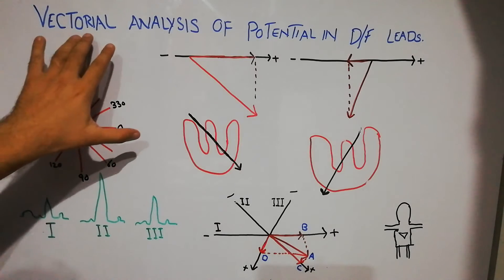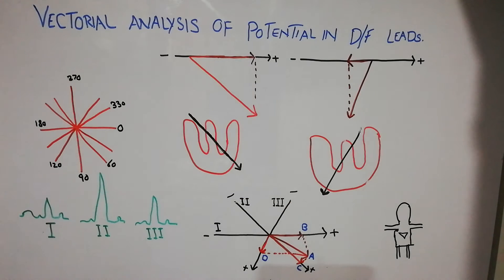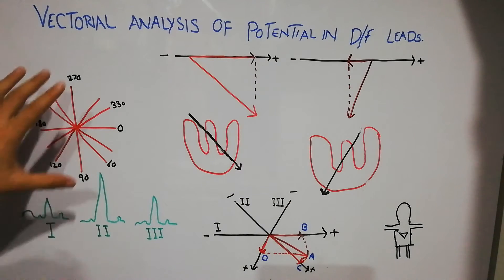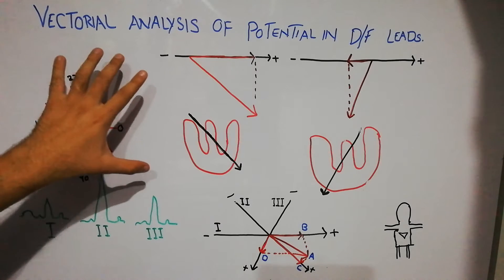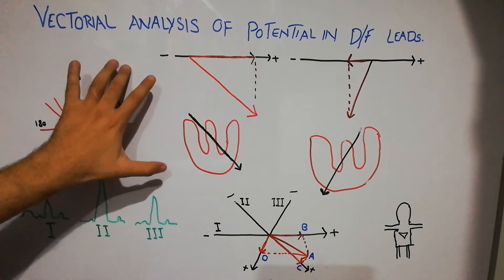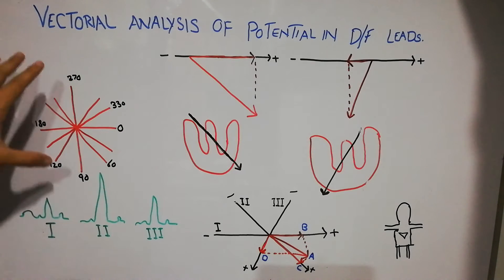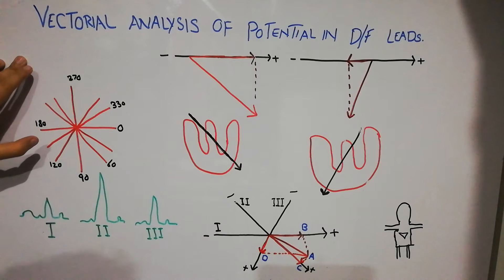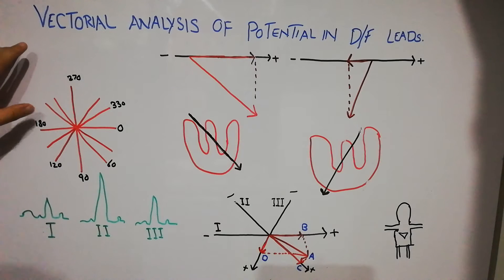Today we are going to discuss the vectorial analysis of potential in different leads. In the last few lectures we have already discussed that the ECG, or electrocardiogram, is recorded with the help of an ECG machine which takes input from 12 different leads. Out of the 12 leads, 3 are bipolar limb leads, 3 are unipolar limb leads, and 6 are precordial or chest leads.